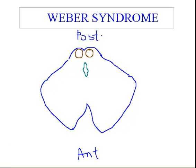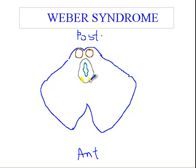Then you have the periaqueductal gray matter. Periaqueductal means around the aqueduct, so if this is the aqueduct of Silvius, the periaqueductal gray matter is somewhere in here. Then we have the third nerve nuclei and the fascicle of the third nerve. The third nerve nucleus is here on one side and on the other side here, and the third nerve goes like this — so you have the fascicle of the third nerve here.